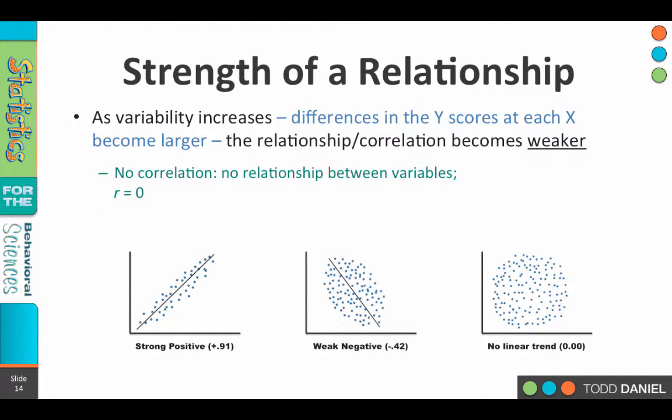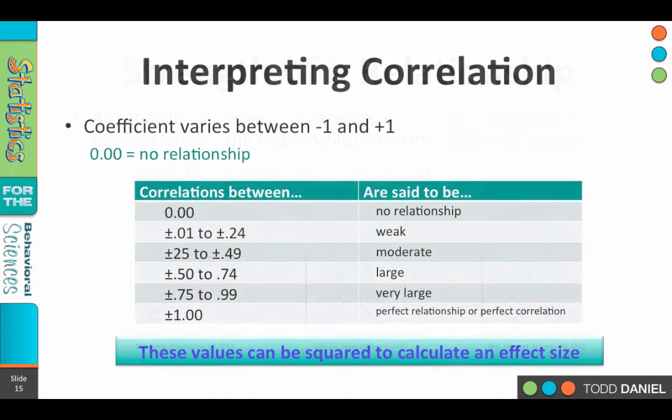Now we should also consider variability and what it does to correlations. As variability increases, as there's more differences in Y scores at each X score, then the correlation becomes weaker. And at an R of 0, where there is no linear trend and no correlation, we'd find nothing but variability, just this big cloud of dots. So as variability decreases, as the dots get closer to the line, we're seeing a stronger relationship. As variability increases, we see a weaker relationship with our variables.